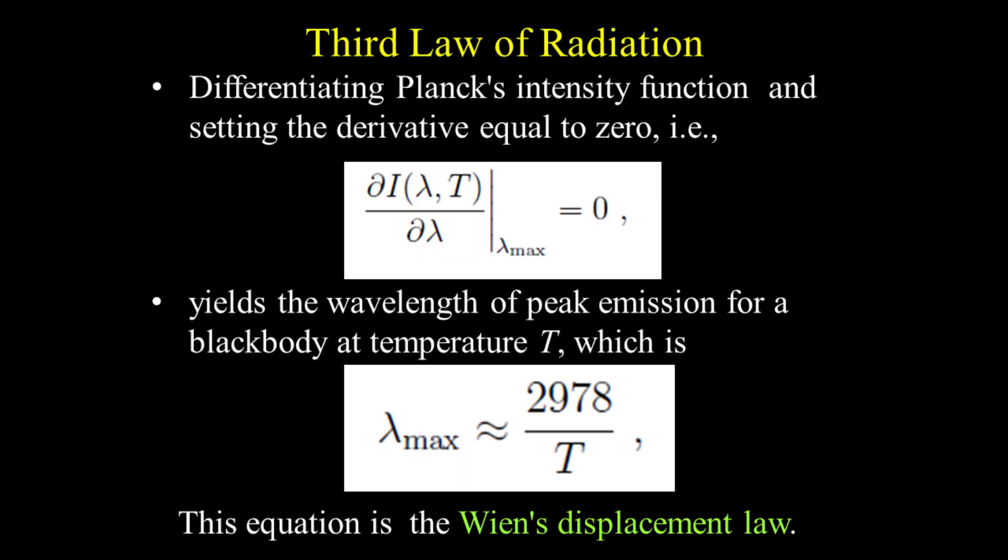The third law of radiation can be derived as follows. We first differentiate Planck's intensity function and set the derivative equal to zero. We then yield the wavelength of peak emission for a blackbody at temperature T. This equation is Wien's displacement law.